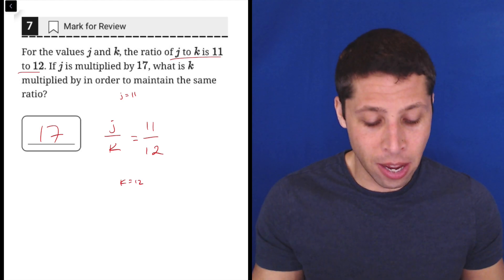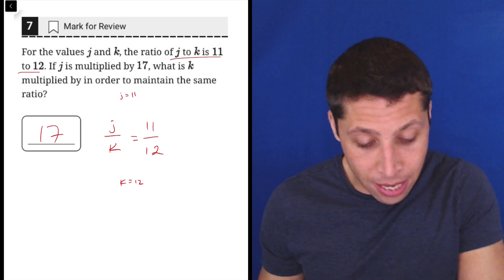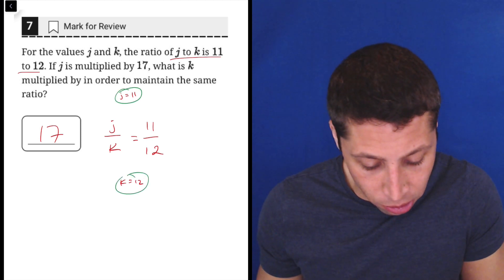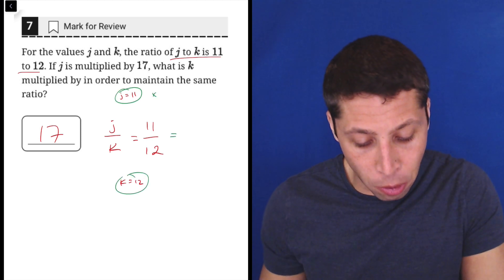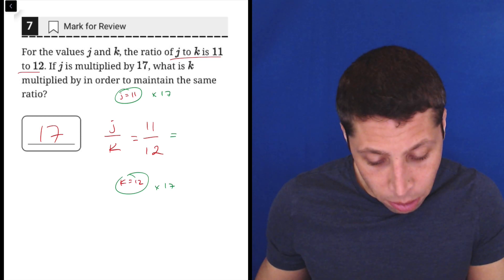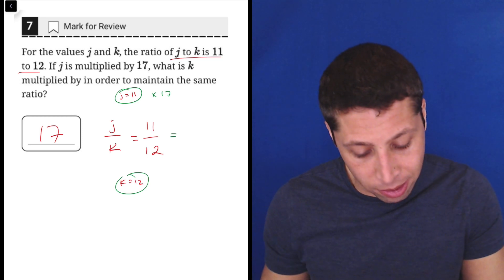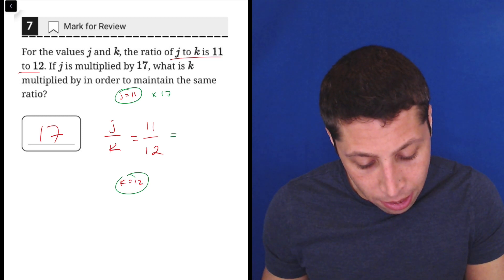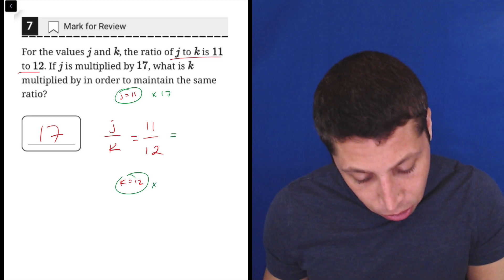So the same thing is going to happen here. We can just then create, using these numbers, new versions. Let's multiply J by 17, but let's only multiply K by X. Let's pretend we don't know, so this is going to be multiplied by X here.